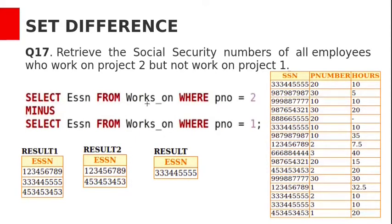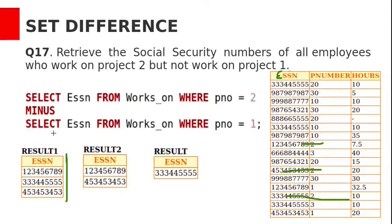The equivalent SQL query is: SELECT ESSN FROM works_on WHERE P_number = 2 MINUS SELECT ESSN FROM works_on WHERE P_number = 1. The works_on relation has ESSN, P_number, and hours. The first query returns 3 employees working on project 2 with their SSN values. The second query returns 2 employees working on project 1 with their SSN values.